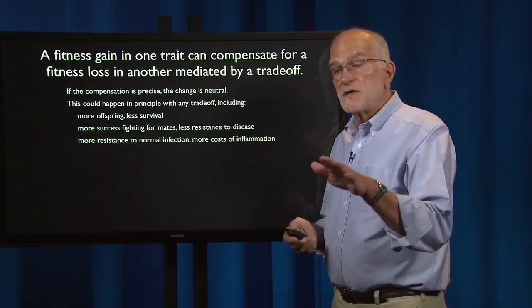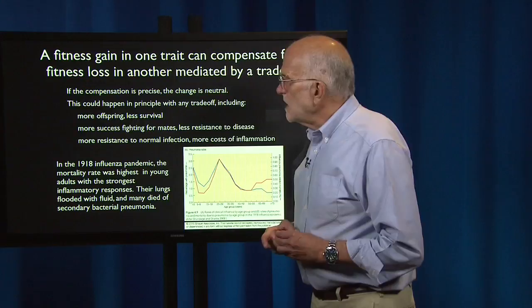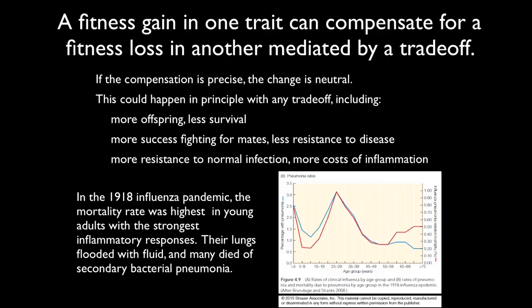However, the compensation is often not terribly precise. For example, in the 1918 influenza pandemic, the mortality rate was highest in young adults with the strongest inflammatory responses — their lungs flooded with fluid, and many died of secondary bacterial pneumonia. This was a trade-off between having a strong inflammatory response and a robust immune system that dealt well with most infections, but was inappropriate for the H1N1 variant causing the 1918 flu epidemic. It was a new experience for the immune system, resulting in a spike in mortality in people between about 20 and 35 years of age.